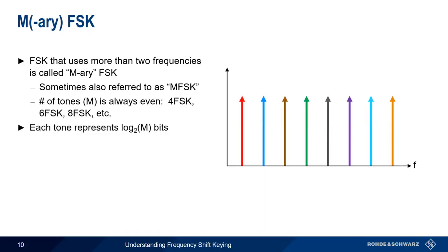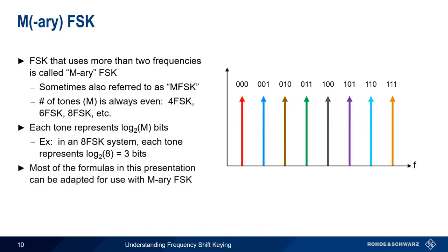Each of these tones or frequencies then represents log 2 M bits. For example, in an 8 FSK system, M is 8 and each tone is 3 bits. Most of the BFSK formulas in this presentation can easily be adapted to apply to the more generic case of M-ary FSK.